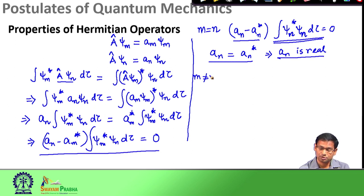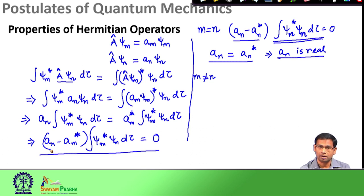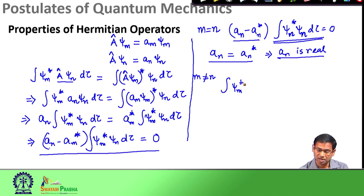Then we continue for case 2, when m is not equal to n. When m is not equal to n, A_n is not equal to A_m*, so this term cannot be zero, and therefore the second term must be zero. We are assuming that the eigenvalues A_n and A_m are non-degenerate, i.e., they are not equal. So if m is not equal to n, the second term must be zero: the overlap integral ∫ψ_m* ψ_n dτ equals zero.